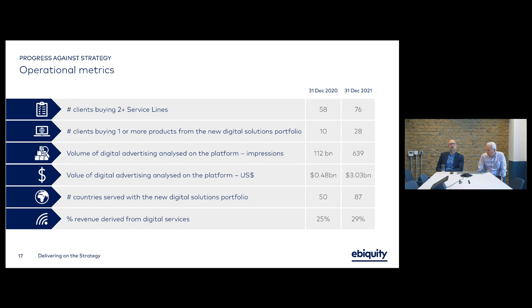We're analysing data from 87 markets, up from 50. We're targeting more of our revenue from digital services. At end of December 2020, 25% of our revenue came from digital services — that has ticked up to 29%. As the whole business grew by 13%, digital services grew faster. We want to get that figure above 30% and gradually move it towards representing half of our business.